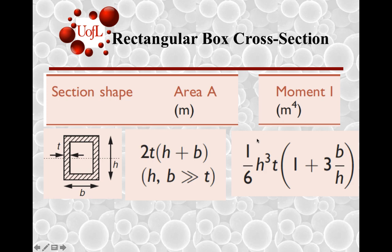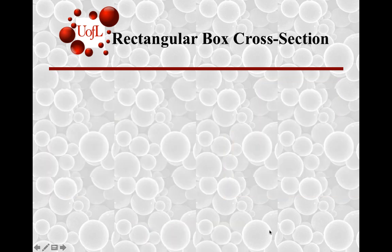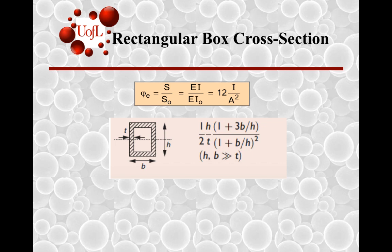For that situation, the area moment, as you will see in table 9.2, reduces to this term. In a similar manner, the shape efficiency factor for this rectangular box cross-section can be determined by 12 times I divided by A². You have I over here, you have A over here—introduce these terms and determine for yourself that for the condition where the sides of the rectangular box are way bigger than the thickness t, you have a shape efficiency factor that depends on h, b, and t, the different geometrical attributes.